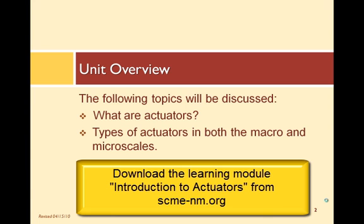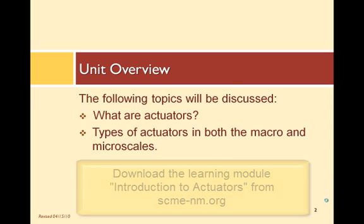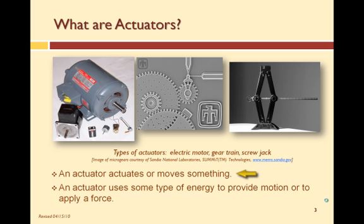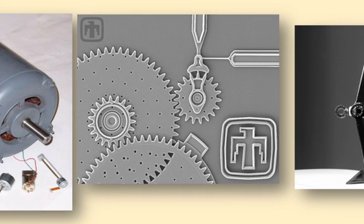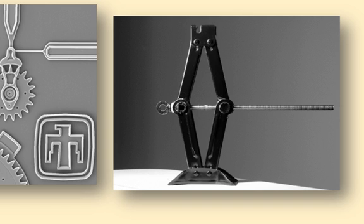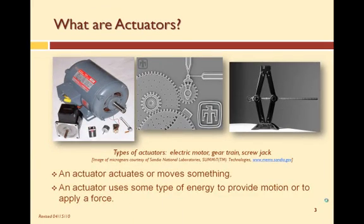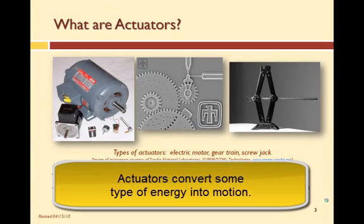The lesson goes into more detail on some of the devices that we discuss in this presentation. An actuator is a device that actuates or moves something. An actuator uses some type of energy to provide motion or to apply a force. For example, an electric motor uses electrical energy to create rotational movement or to move an object. A gear train uses an input such as mechanical or electrical to move something in a rotary or linear motion. And a screw jack uses manual or mechanical input to create linear motion. So in short, an actuator converts some type of energy into motion.